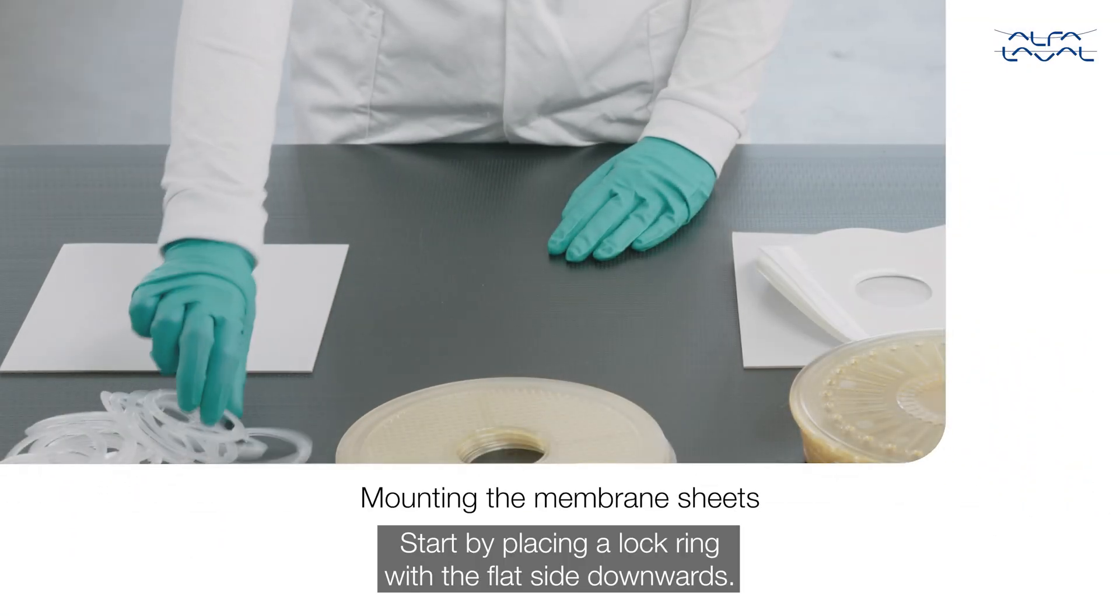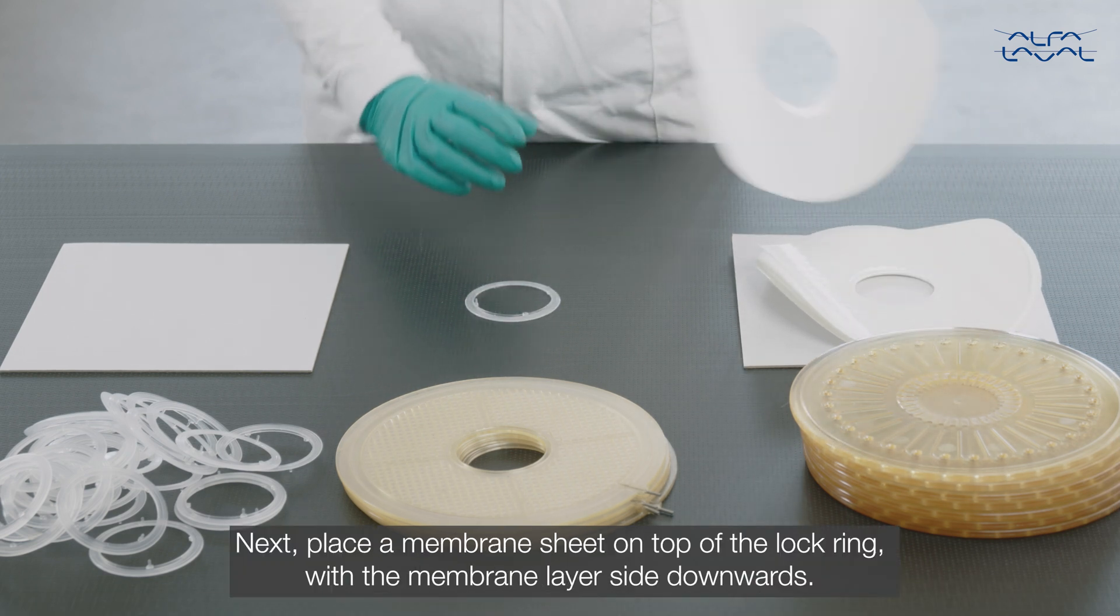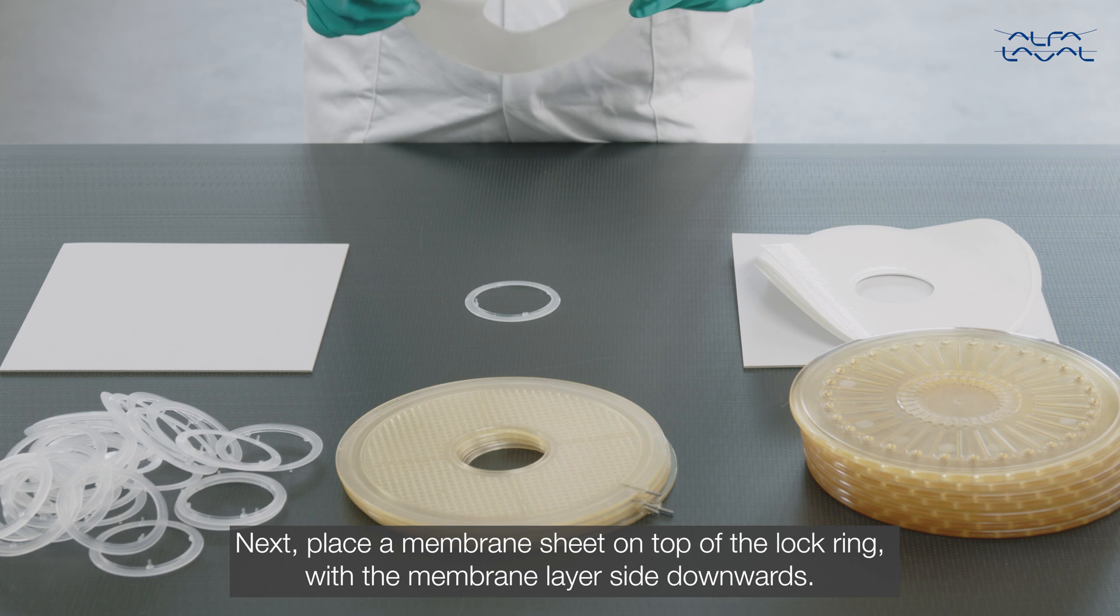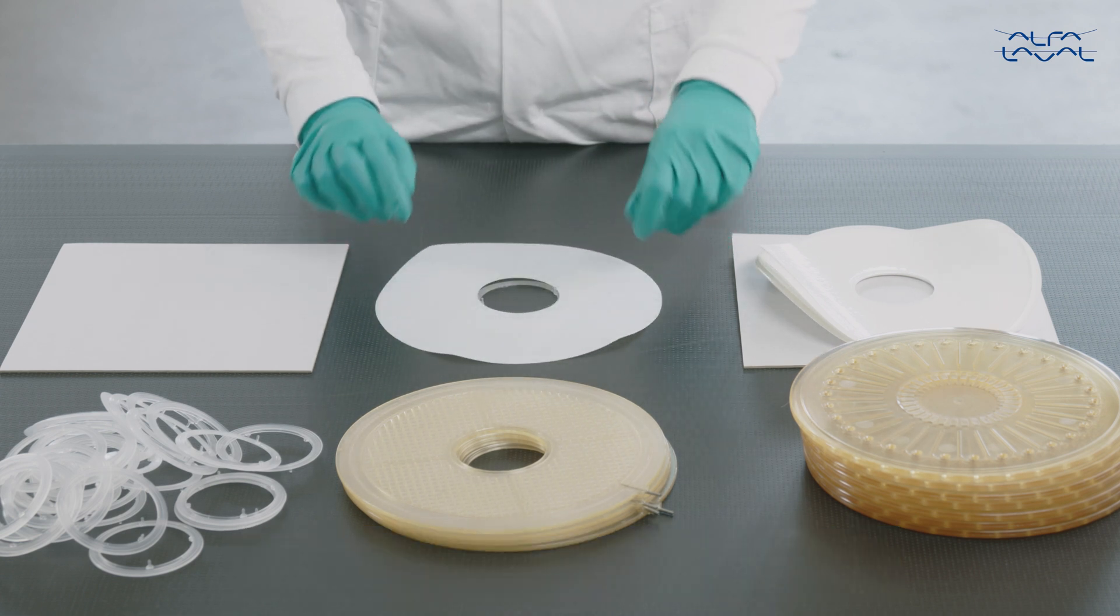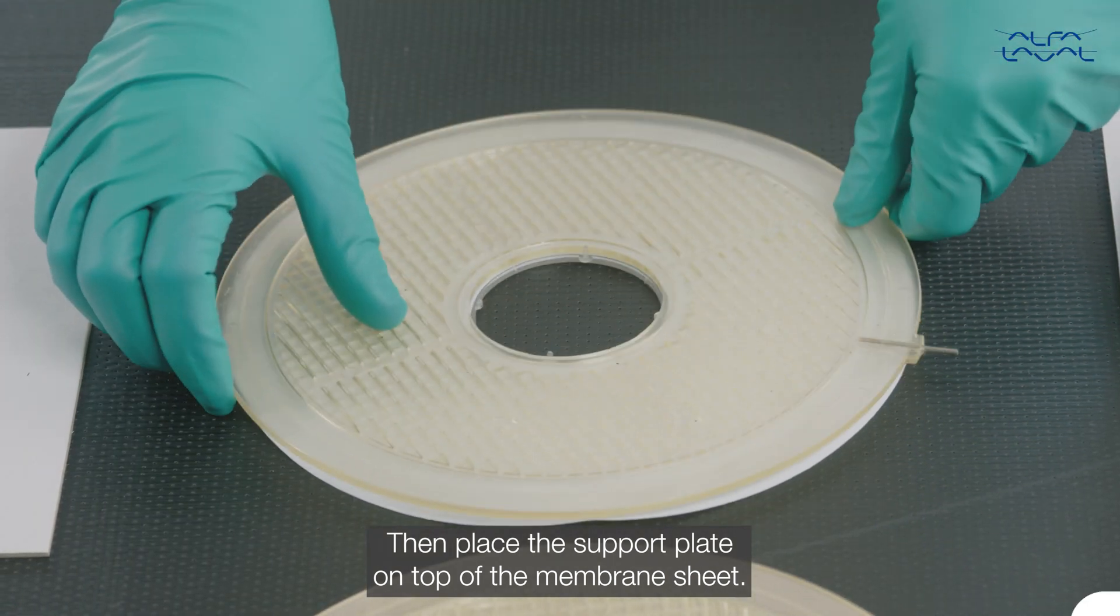Start by placing a lock ring with the flat side downwards. Next, place a membrane sheet on top of the lock ring with the membrane layer side downwards. Then place the support plate on top of the membrane sheet.